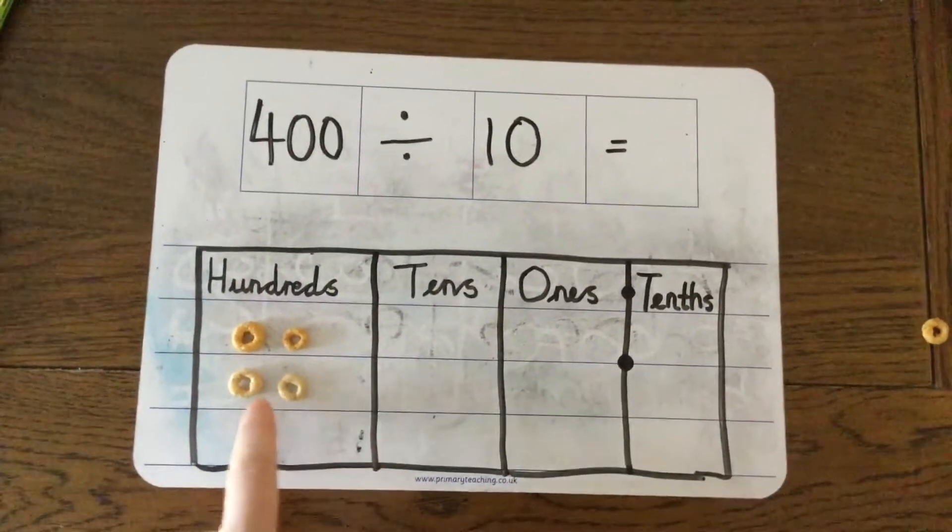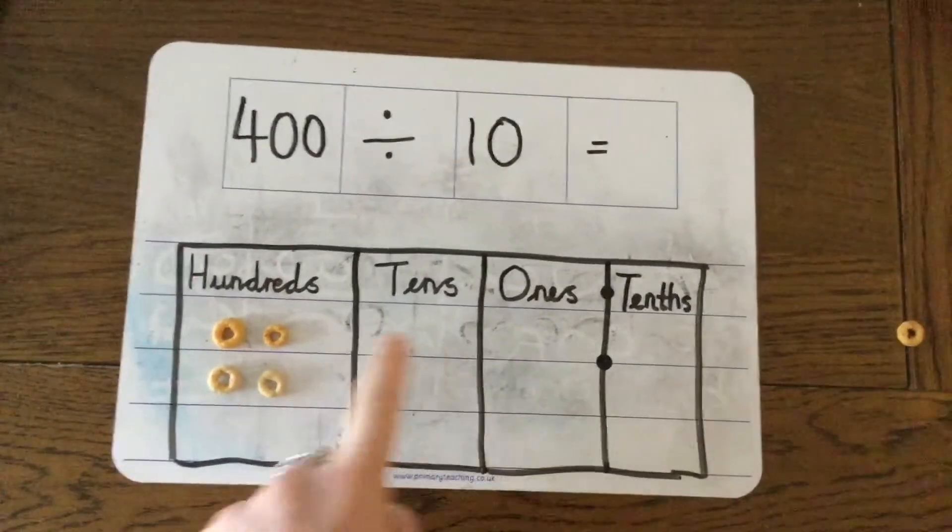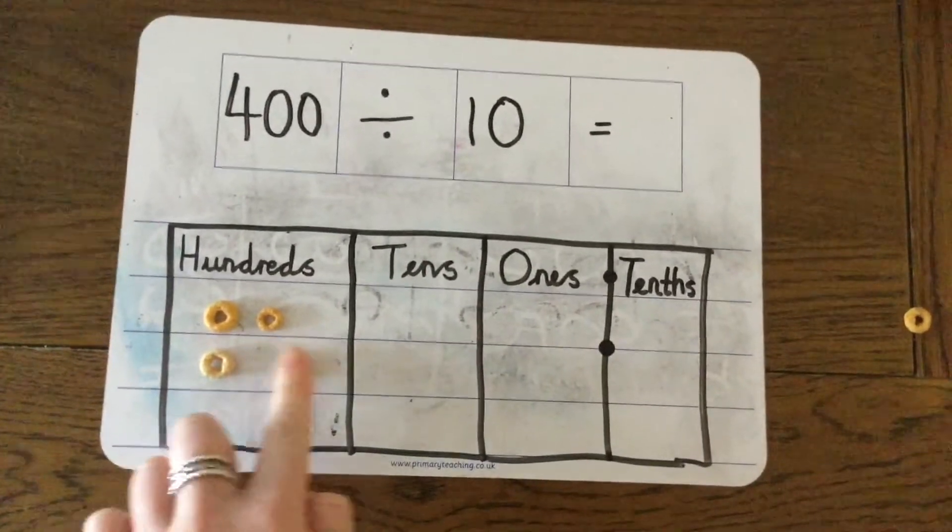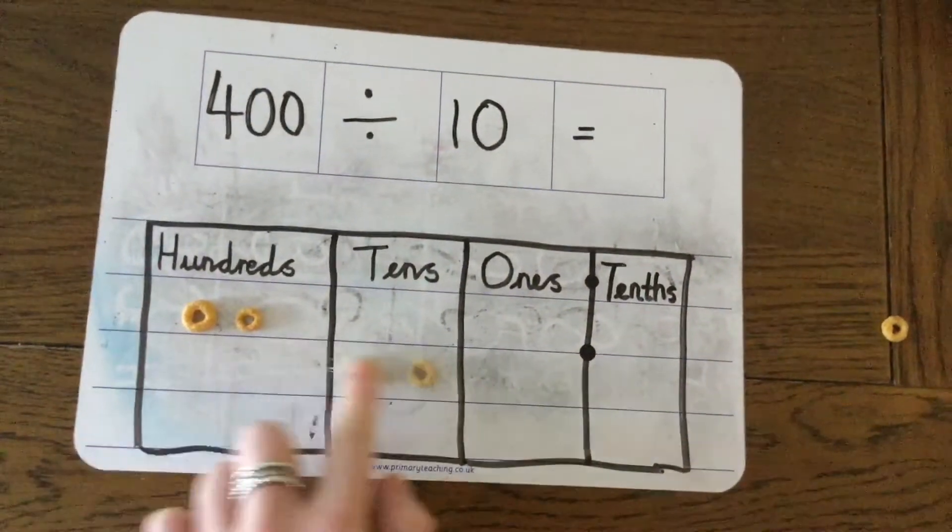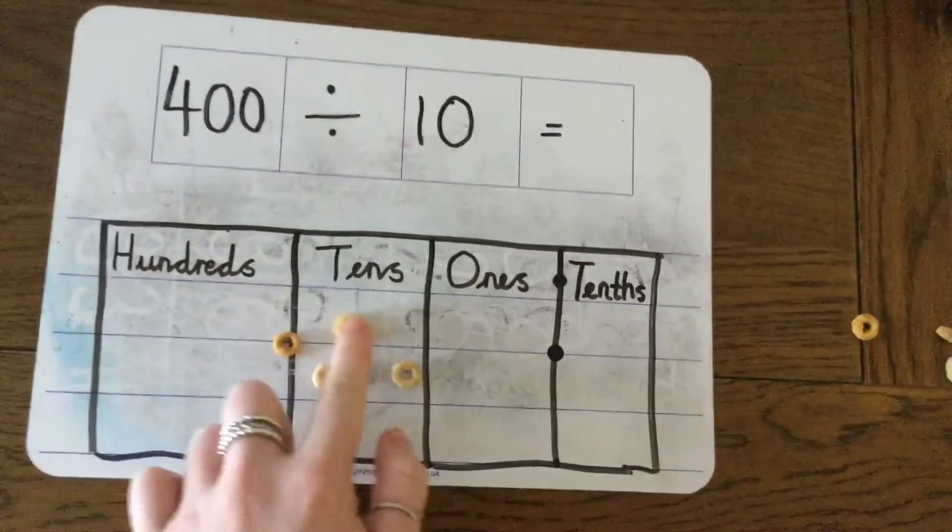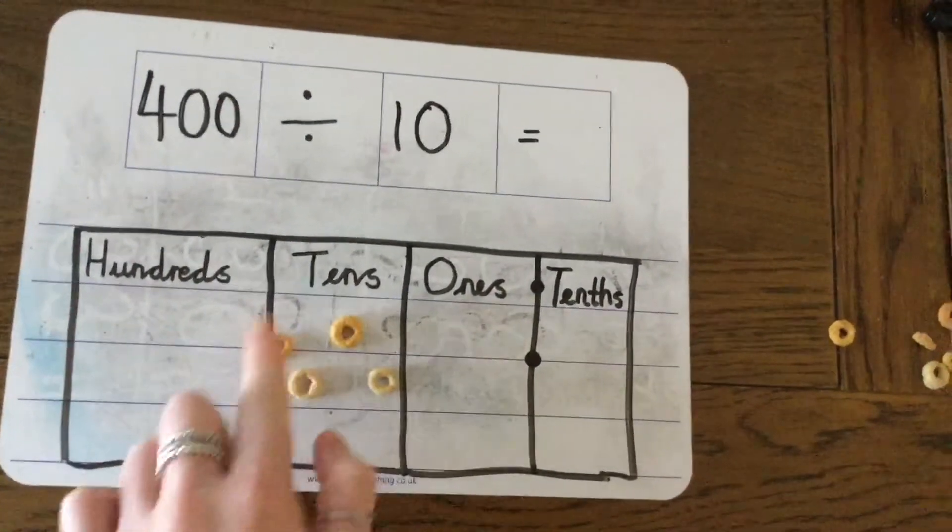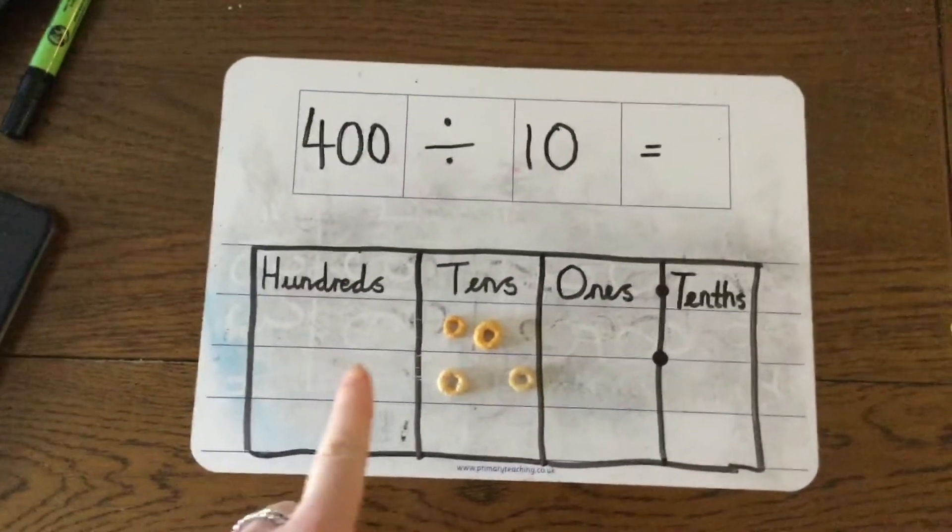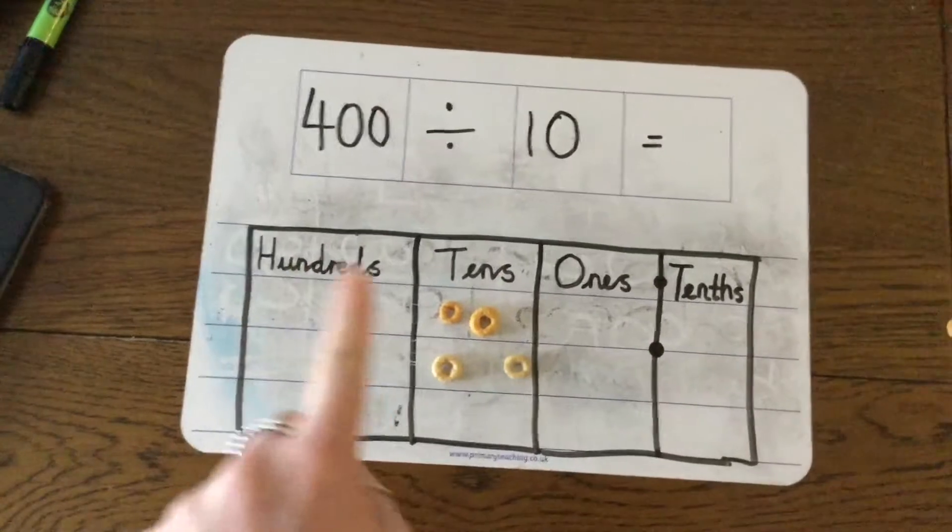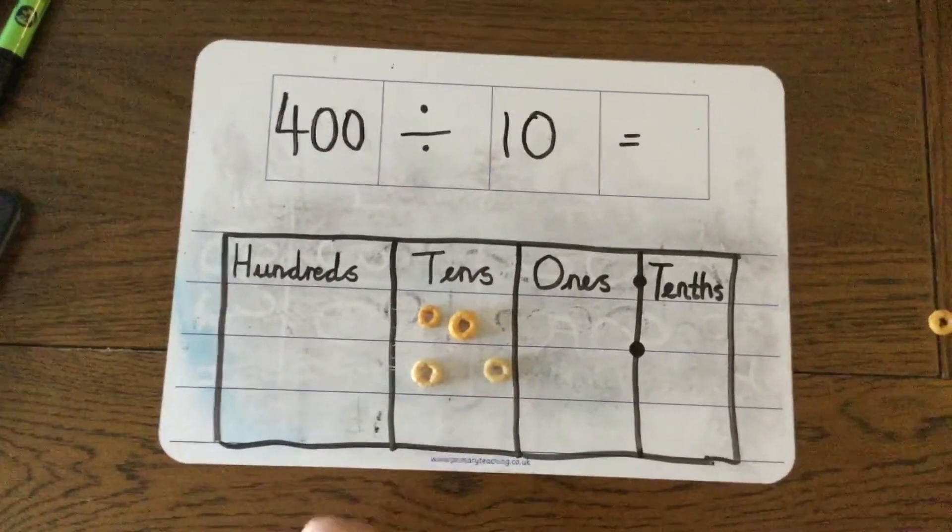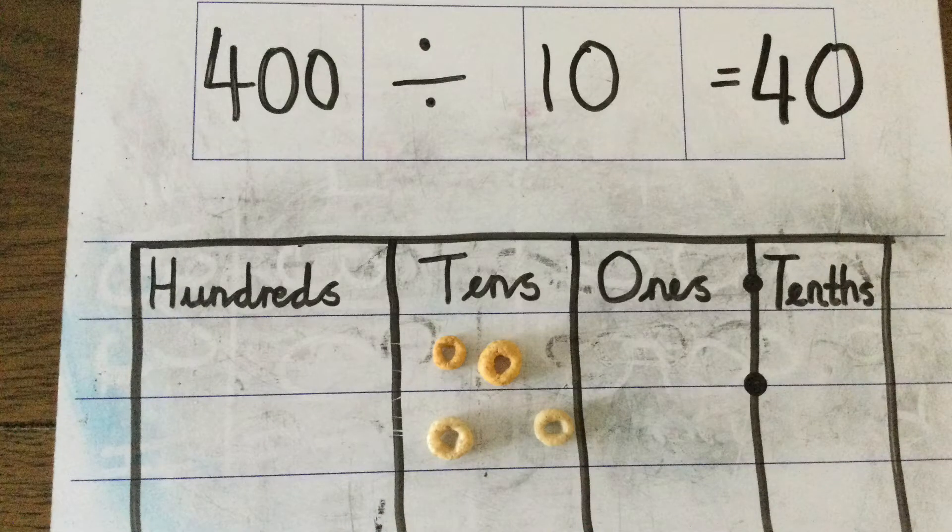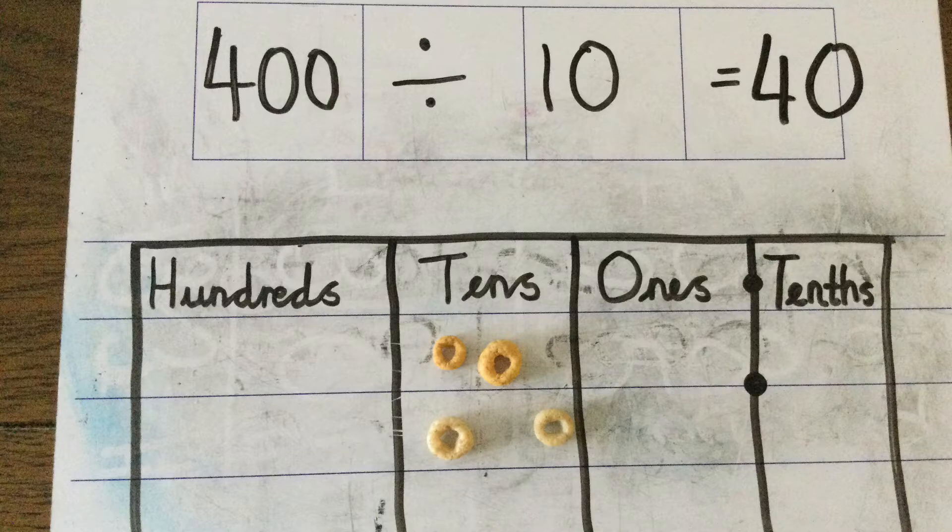And when I divide by 10, the digits are taking a step to the right on my place value chart. So 400 divided by 10 is 10, 20, 30, 40. As you can see, the value of my 4 has changed from 400 to 4 tens.